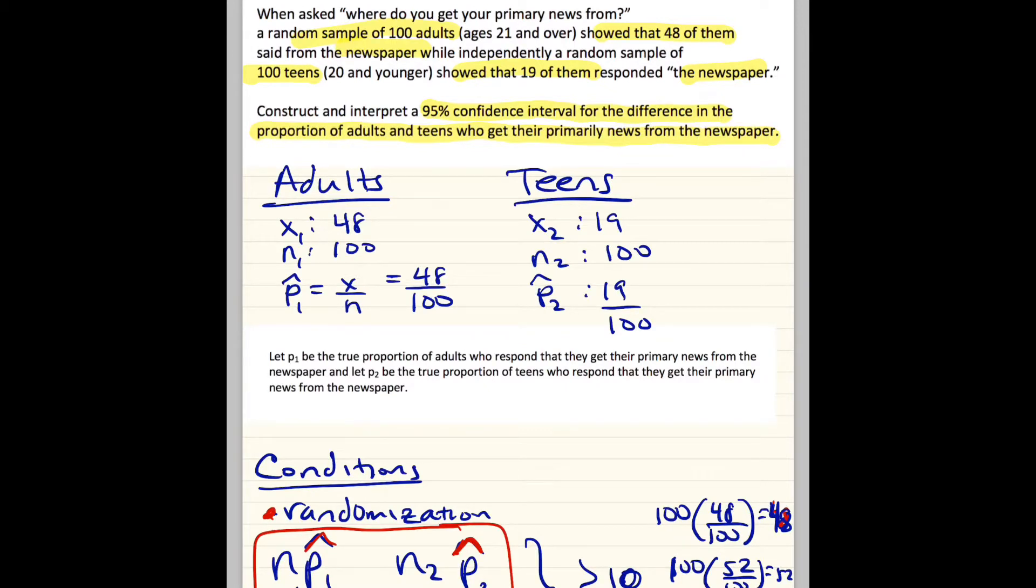So what I did first was I broke this down into two parts, adults and teens. I wrote X and N here. I know we never write X and N, but just because we're going to put in the calculator, I wanted you guys to know that X is the numerator, N is the denominator. We just typically say P-hat 1 is 48 out of 100, P-hat 2 is 19 out of 100. Also, you can say 1 minus P-hat 2, which is Q-hat 2, is going to be 81 out of 100. And you can say that this is going to be 52 out of 100, which is Q-hat 1.